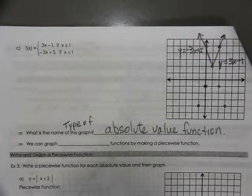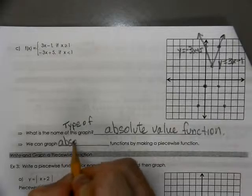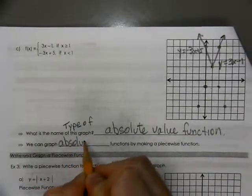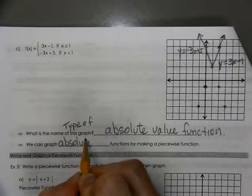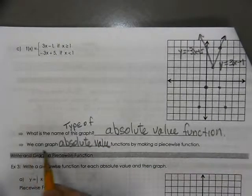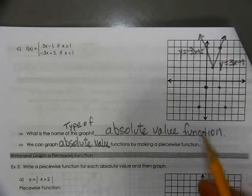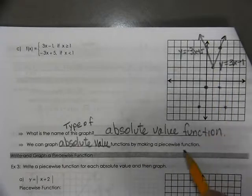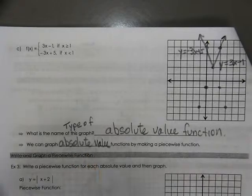What is the type of graph? It is an absolute value function. The way we graphed it here was using piecewise equations that represented an absolute value.